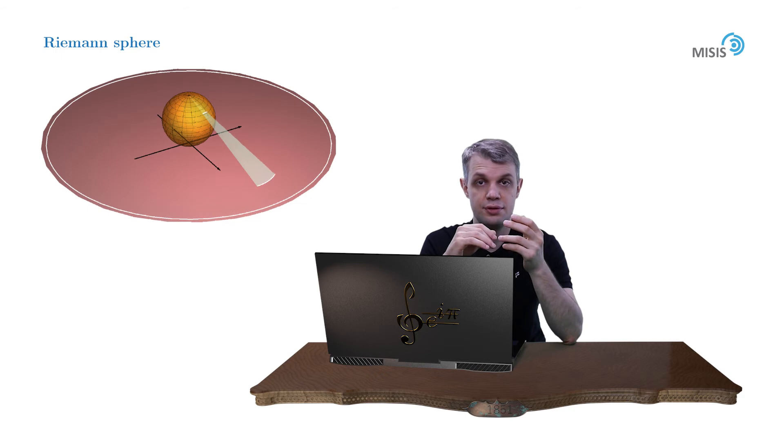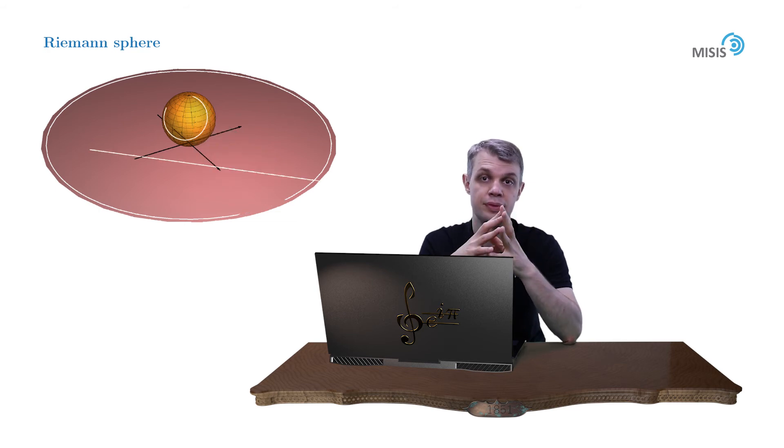It's not hard to prove that the circle on a plane becomes a circle on a Riemann sphere. Also, any line on a complex plane is projected onto a circle on a Riemann sphere, and the latter is always obvious.